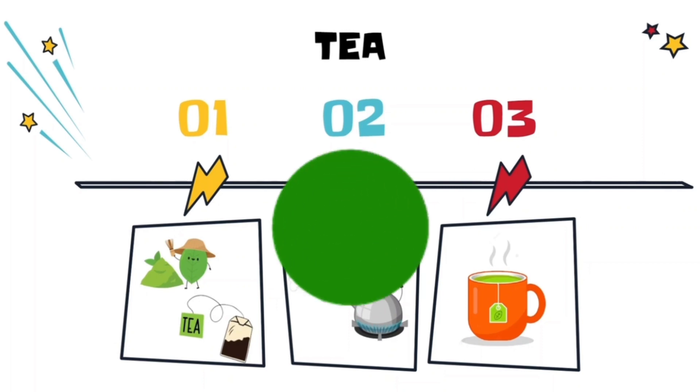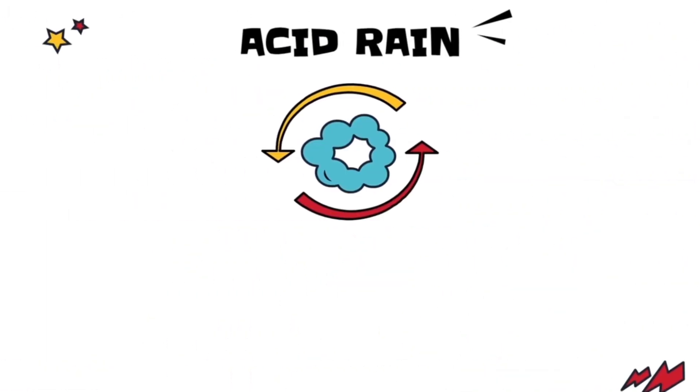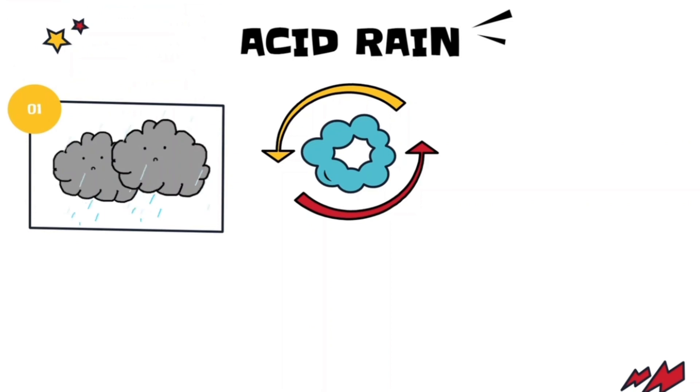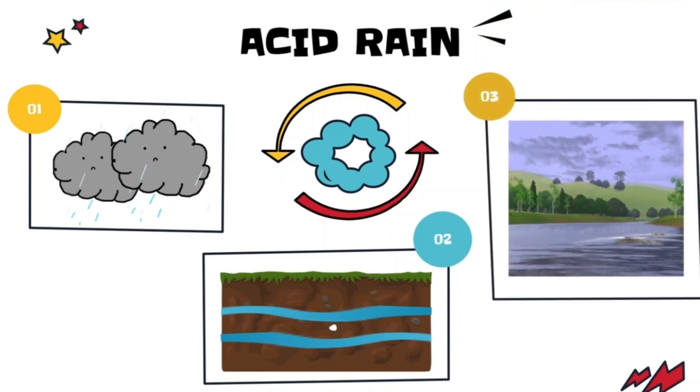Then acid rain also carries out this leaching process. As the acidic rainwater flows through the soil, it acts as a solvent and will leach aluminium from soil clay particles. Then the rainwater will bring this aluminium into streams and lakes. That aluminium will cause water pollution and it may be harmful to plants as well as animals.